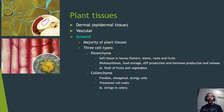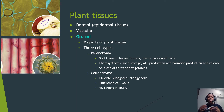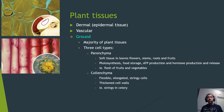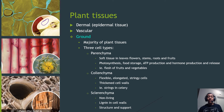Collenchyma cells are elongated, flexible cells with a thick cell wall responsible for providing flexibility to the plant. A good example is the stringy material in celery — it's there to provide flexibility, which is why you can bend celery back and forth. Sclerenchyma cells are non-living cells that make up the lignin in cell walls and provide structure and support.